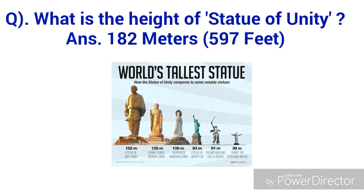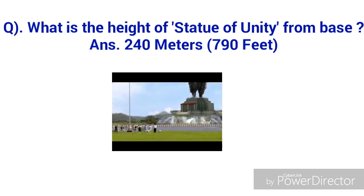First question: what is the height of the Statue of Unity? The height of the statue is 182 meters, which is equal to 597 feet. The next question that can be asked is: what is the height of the Statue of Unity from the base? The height from the base is 240 meters, which is 790 feet.